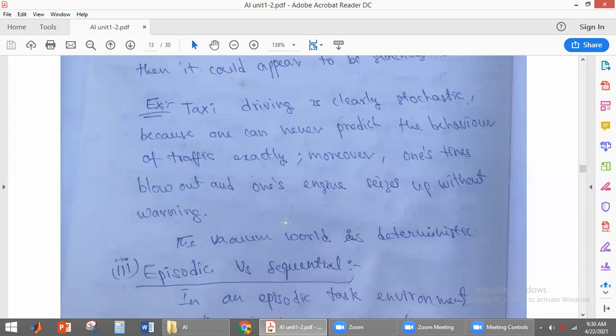Whereas vacuum world, we have discussed, that is deterministic because there is no randomness here. That is why the vacuum world is deterministic. This is the second case of task environment.